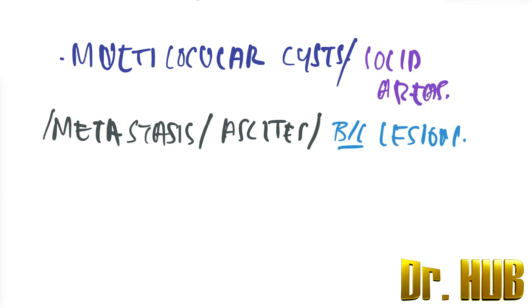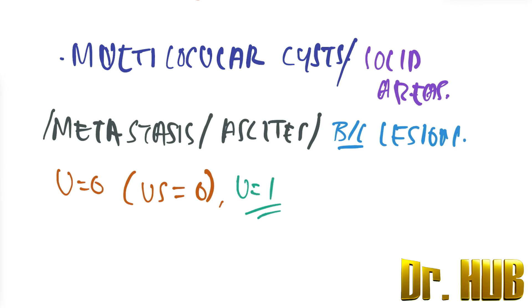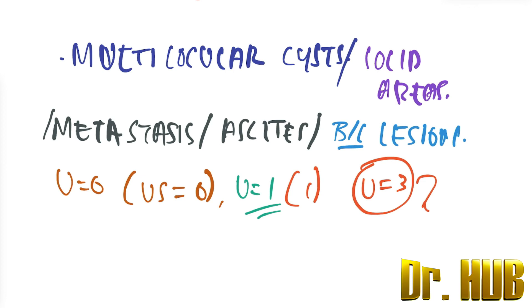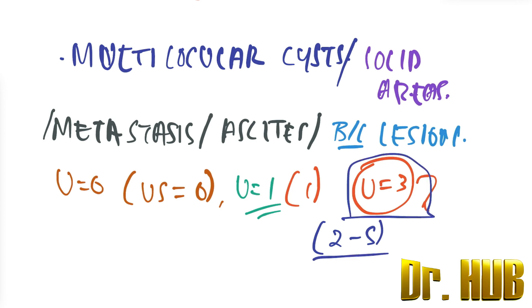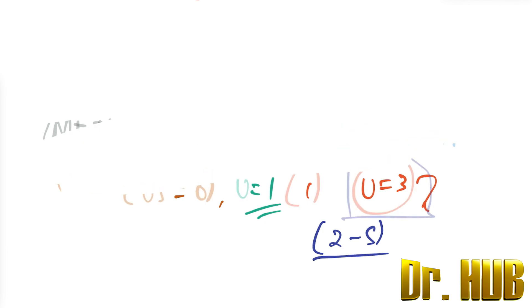U is zero for an ultrasound score of zero, U is one for an ultrasound score of one, and U is equal to three for any score between two to five. So the features scored include multilocular cyst, solid areas, metastasis, ascites, and bilateral lesions.